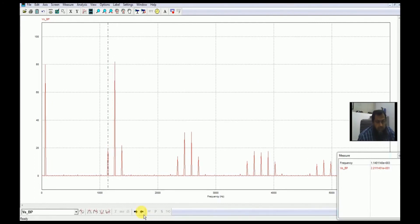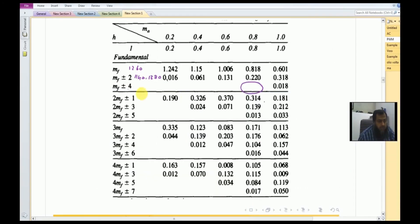At the 1380 Hertz, which is MF plus 2, that is equal to 21.18, that is actually the same. The next harmonic that appears here is at 2 times MF.